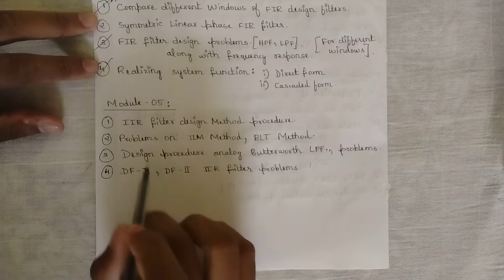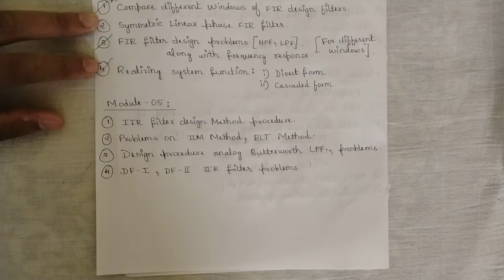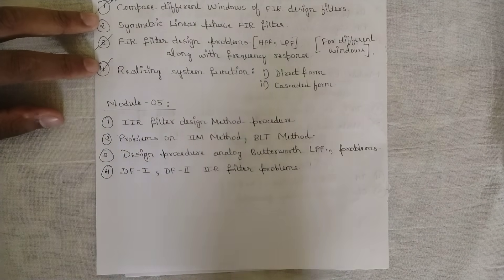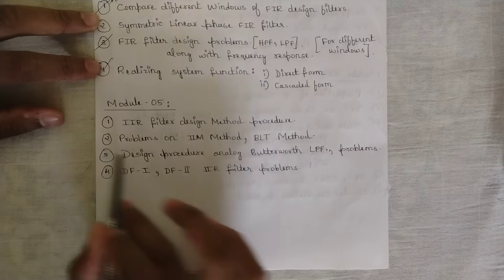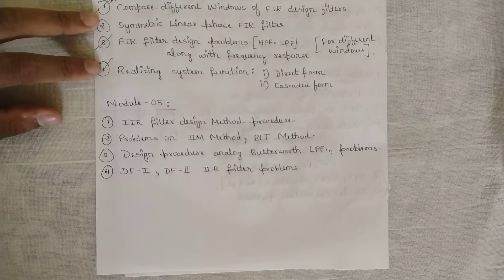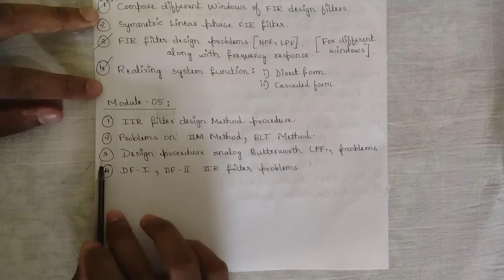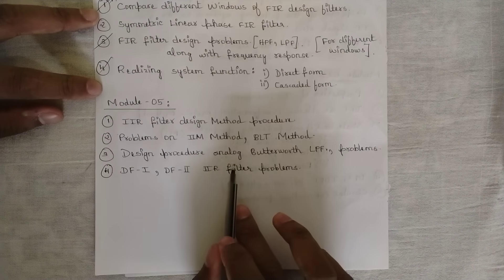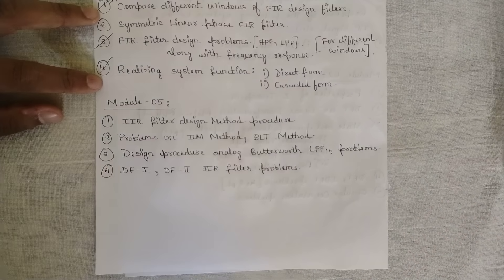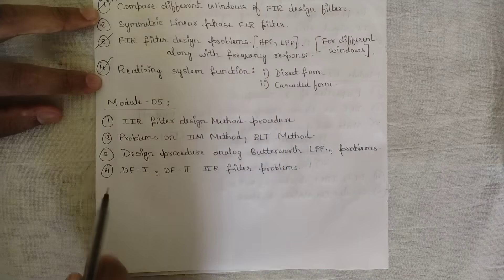From module five, the first topic is the IIR filter design method procedure — how the IIR filter design is done, and the procedure for that. They would also ask problems on the IIM method and BLT method; any one of these method problems would be asked. Go and see my videos for that. Next is the design procedure of an analog Butterworth filter — I did not have time to cover this topic, but it is a very important question.